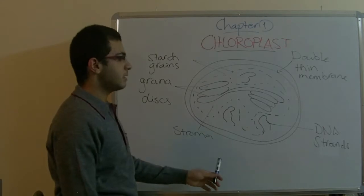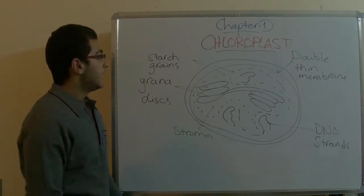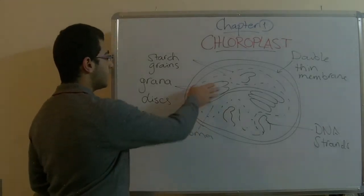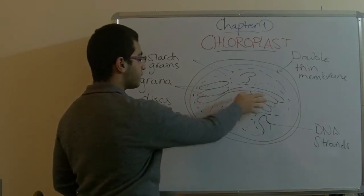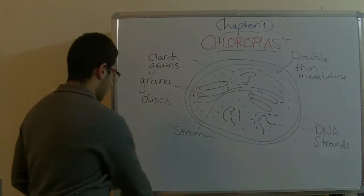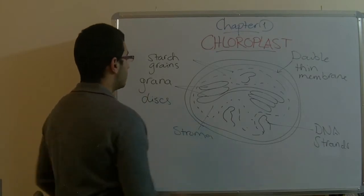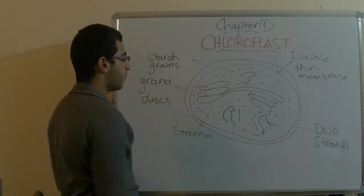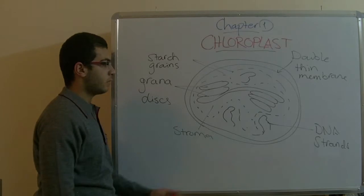So this is the green plastid. Here, the grana discs are arranged along the green plastid, and the grana discs are very important in the chloroplast, and we will know why.